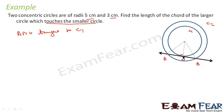Since AB is tangent to circle C1, the angle at the point of contact is 90 degrees. The radius to C1 is 3 cm, the radius to C2 is 5 cm, and similarly 5 cm on the other side. Let the contact point be C. So I have 3 and 5, and I can find AC and similarly BC.